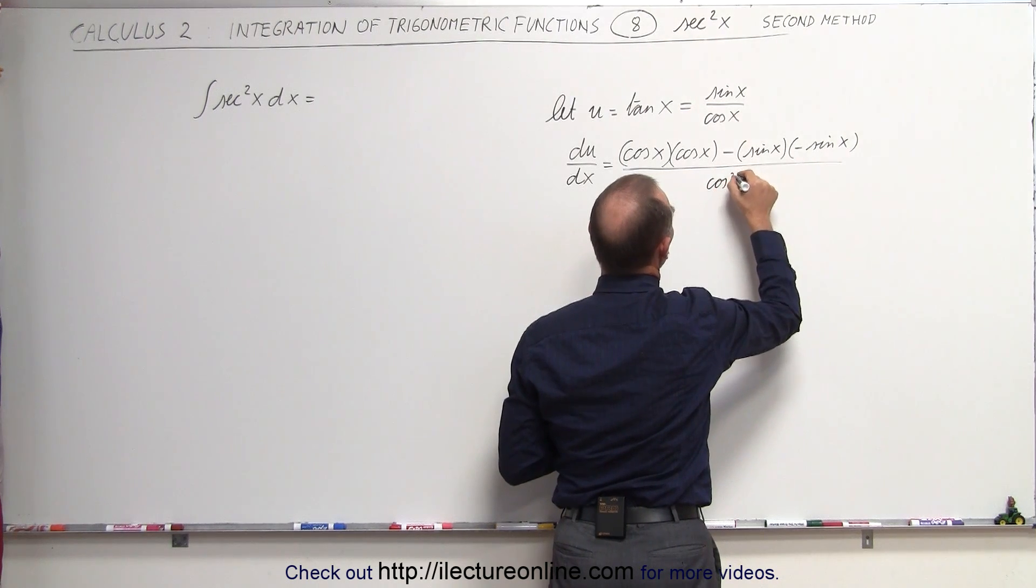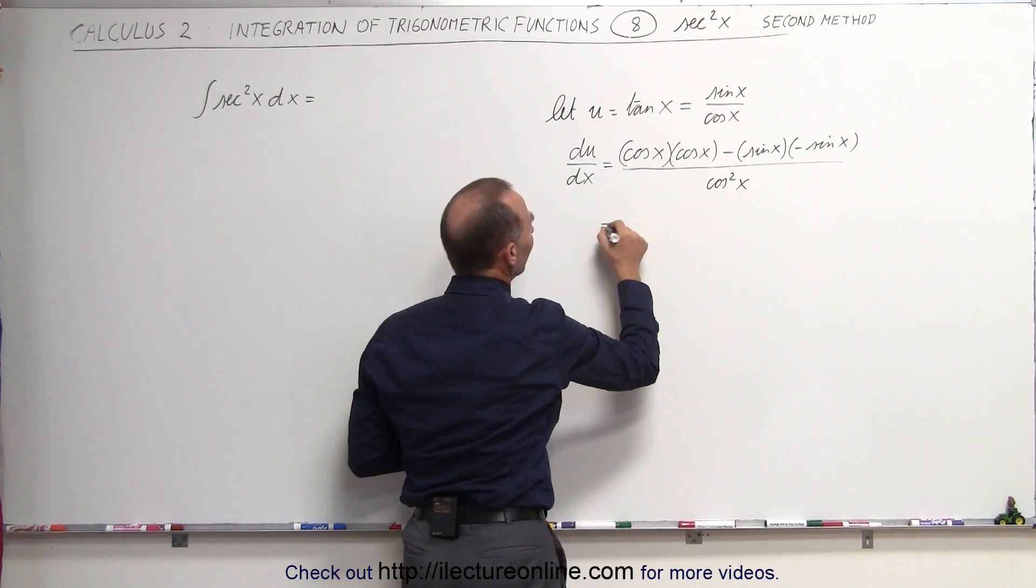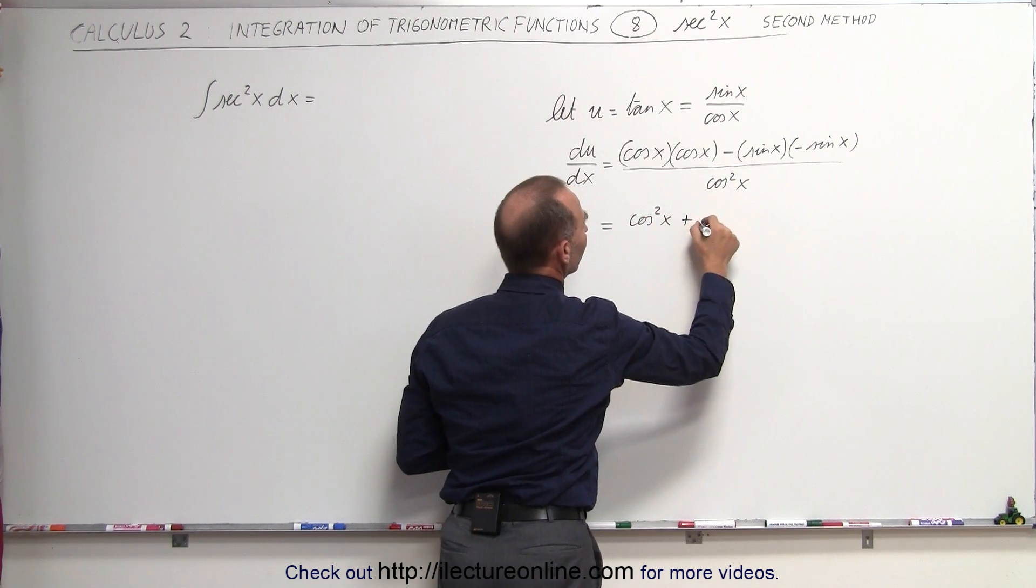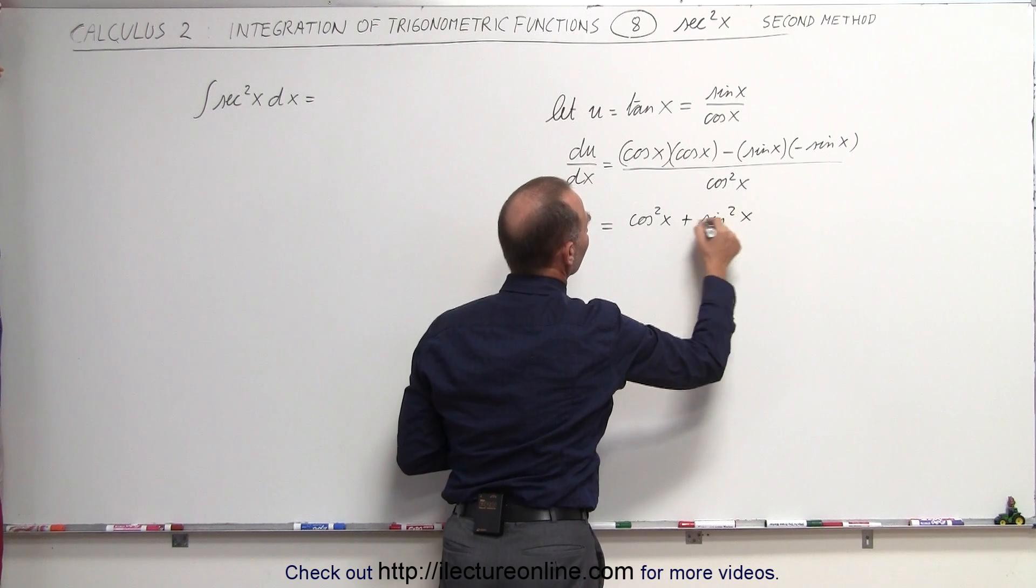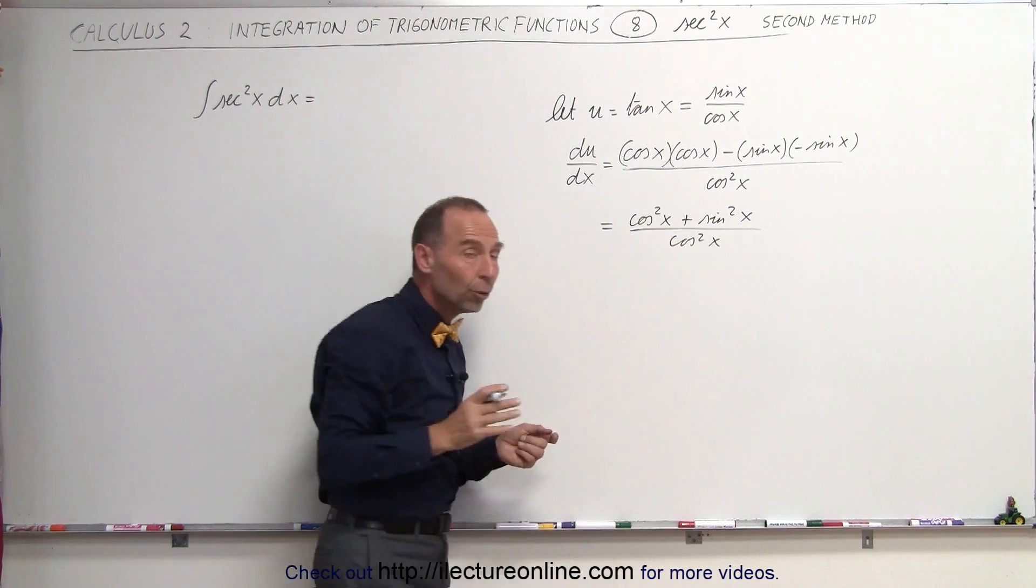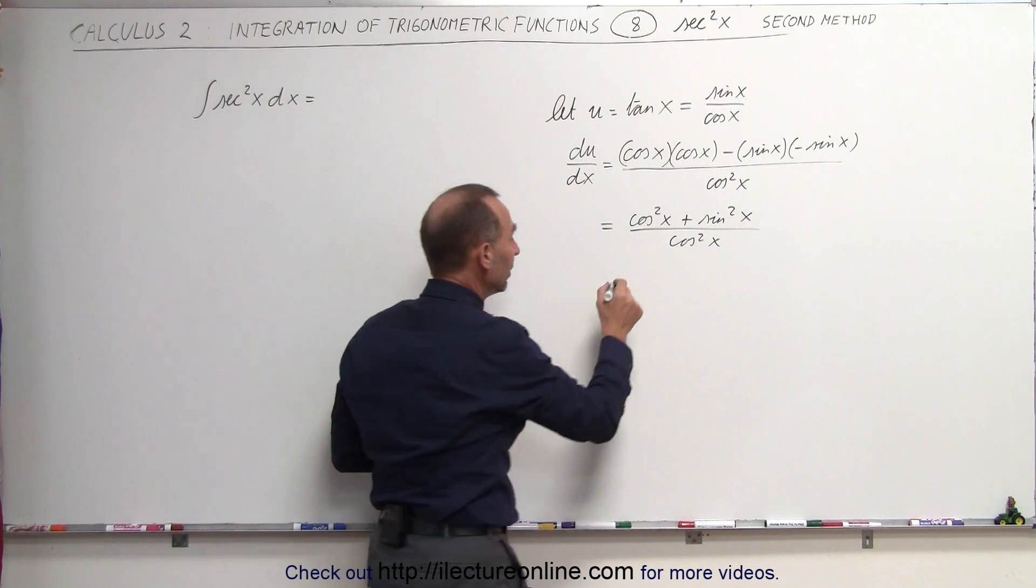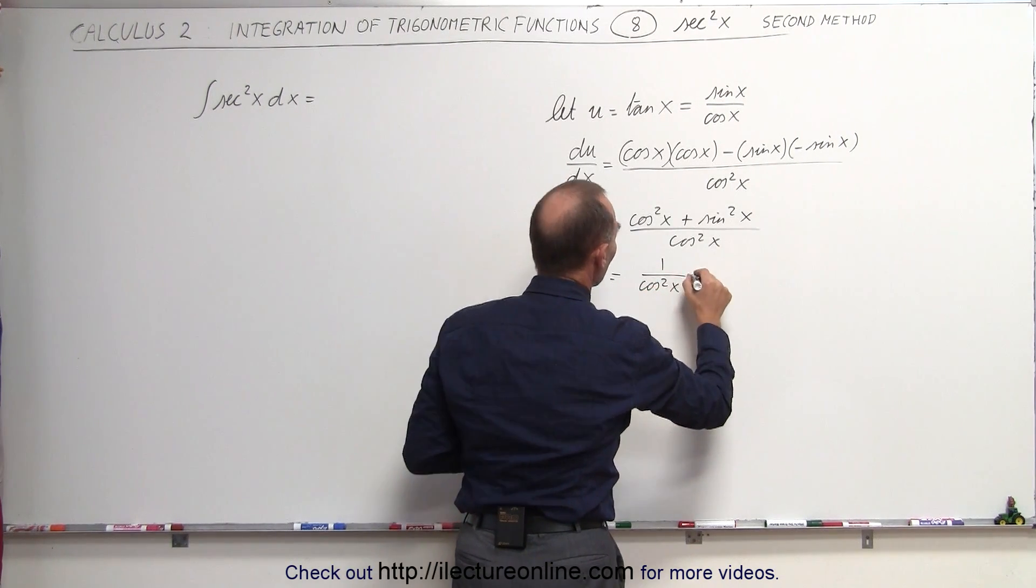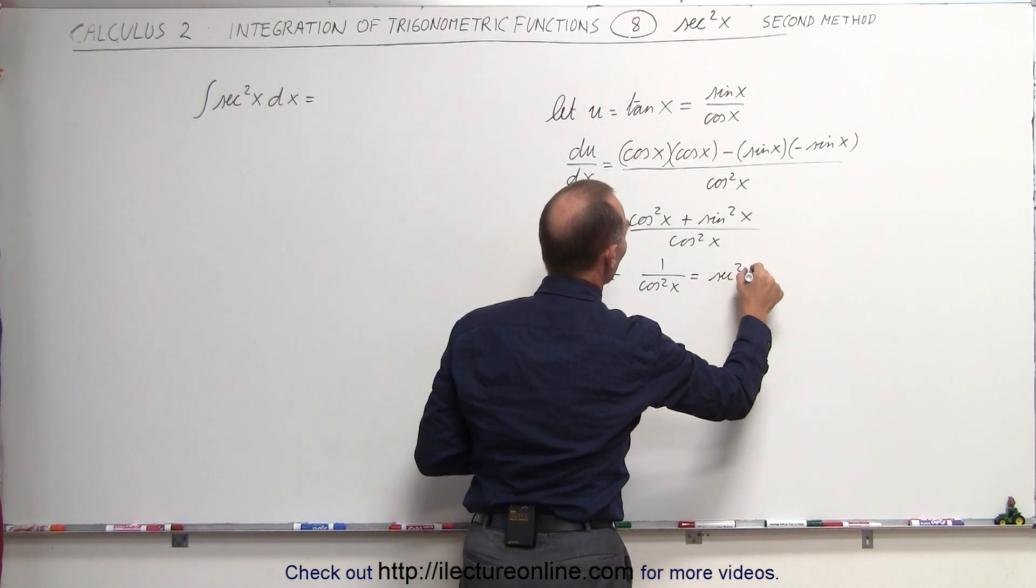That's the cosine squared of x. This simplifies to the cosine squared of x, and minus times the minus is the plus sine squared of x, divided by the cosine squared of x. The numerator, then, of course, simplifies to 1. This is equal to 1 over the cosine squared of x, which is equal to the secant squared of x.